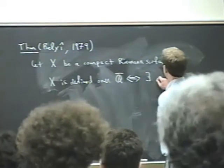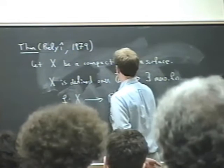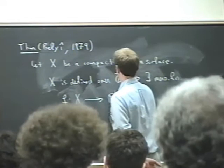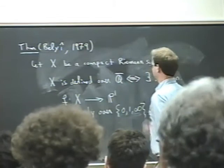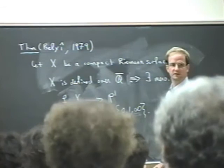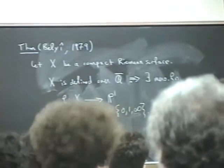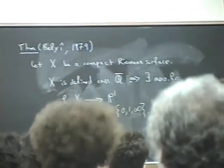Then the theorem is that X is defined over Q bar if and only if there exists a meromorphic function f from X to P1 ramified only over zero, one, and infinity. In other words, this direction is due to Belyi and the other direction I think is due to Weil, in 1956 or something. And the proof of this implication is actually fairly elementary.